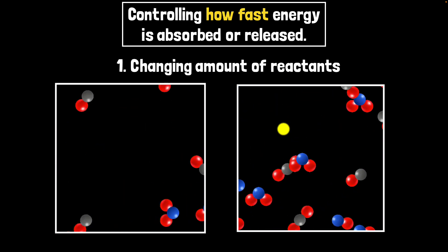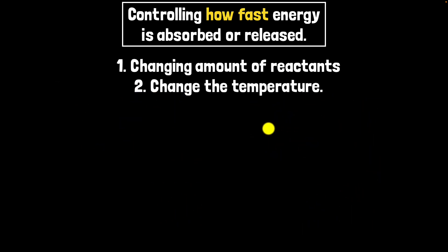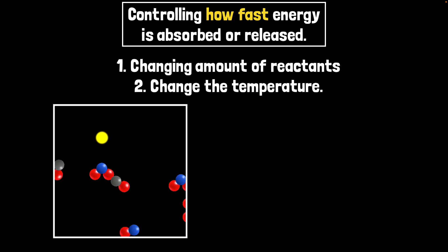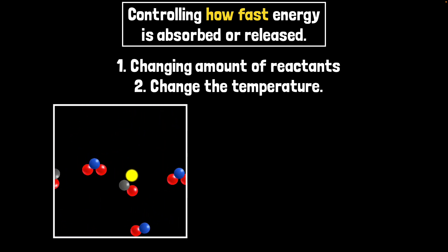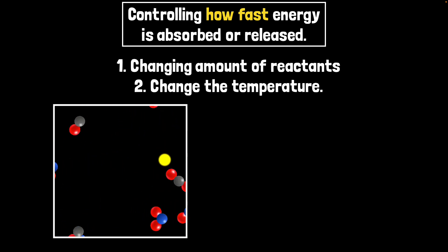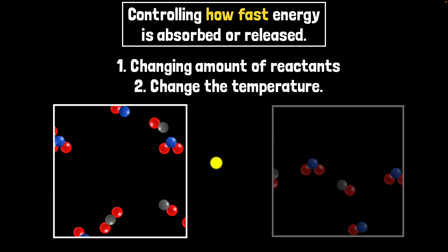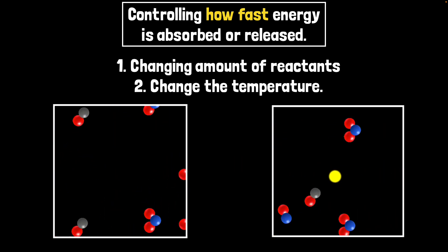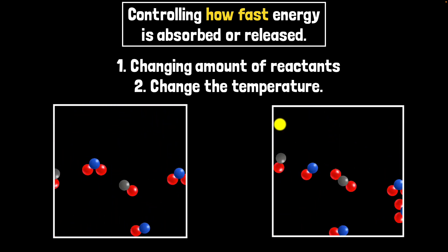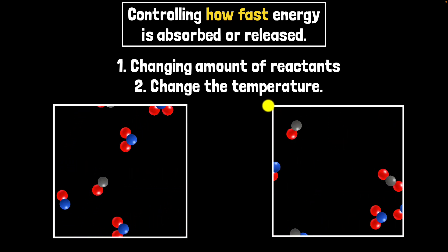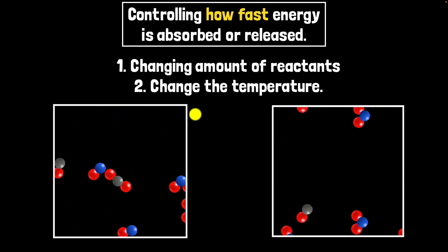The second thing we can do is change the temperature, because temperature is a measure of average kinetic energy. At low temperature, average kinetic energy is low, so fewer collisions happen per second. At higher temperature, particles move faster, so more collisions happen per second. However, higher temperature only increases the rate, not the total amount of energy transferred.